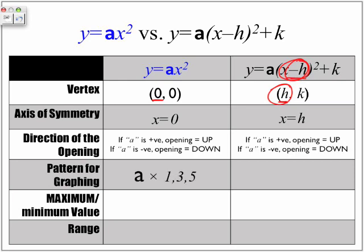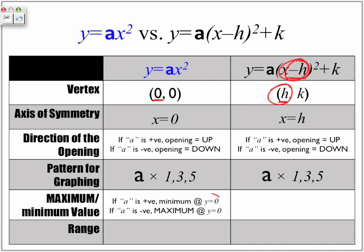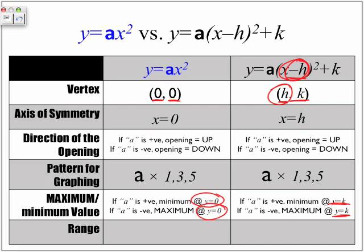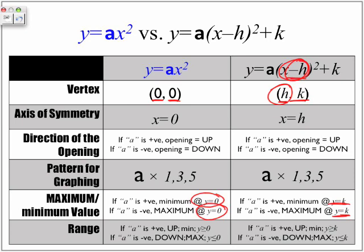In terms of the pattern, it's the same — a being multiplied by 1, 3, 5 depending on the a value. For maximum and minimum value, if the a value is positive we have a minimum value at y equals 0 for the basic form, or y equals k in vertex form. If the parabola goes down, we have a maximum value. The range: y is every number greater than or equal to 0, or greater than or equal to k when the parabola goes up. If the parabola goes down, y is every number less than or equal to k, including k.